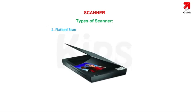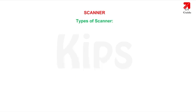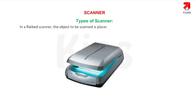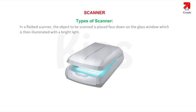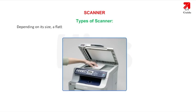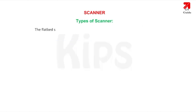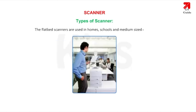2. Flatbed Scanner: This is a popular desktop scanner that looks like a miniature printer with a flip-up cover protecting the glass window. The object to be scanned is placed face down on the glass window and illuminated with bright light. It uses Charged Coupled Device (CCD) technology to read the entire area optically. It can fit standard or legal size documents, and its flexible cover allows scanning of books, newspapers, articles and photographs. Flatbed scanners are used in homes, schools and medium offices.